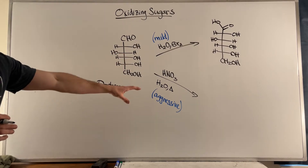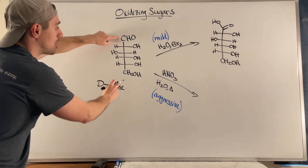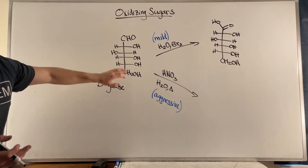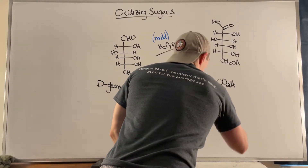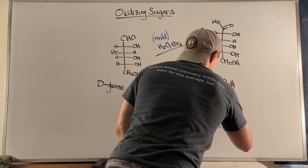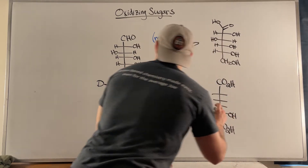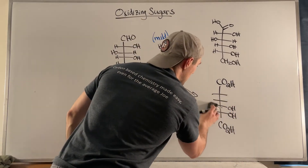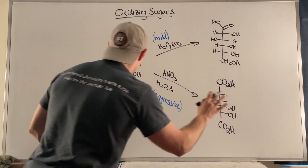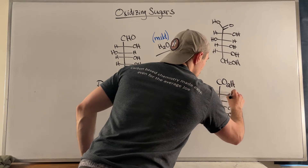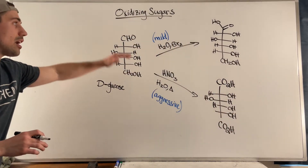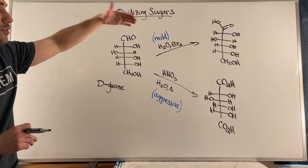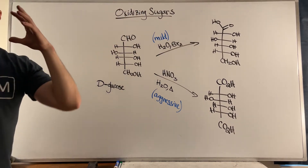On the other hand, if you go the nitric acid route, this is more aggressive — it's going to oxidize both your top and your bottom. You get a carboxylic acid at the top and a carboxylic acid at the bottom. Nitric acid goes for everything, whereas H2O and BR2 only oxidizes the top. So this is more aggressive: it oxidizes the top and the bottom, giving you a carboxylic acid on both ends.